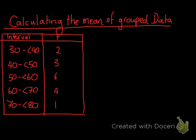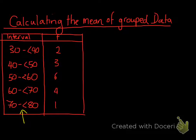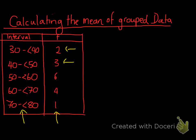But when we have grouped data, we have to do it in a slightly different way because, as you can see, here on the screen I've already drawn a grouped frequency table. We know the frequency of the data values, but we don't actually know what the data values are. This first column shows the intervals, and this shows the number of data values that fall between those intervals. So over here we've got two data values that fall between 30 and 40, three data values that fall between 40 and 50, etc.